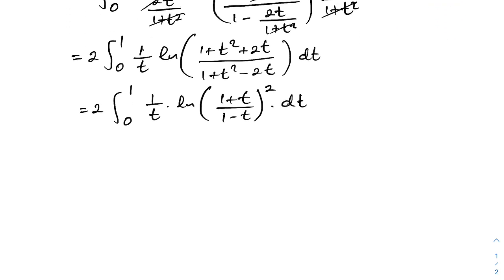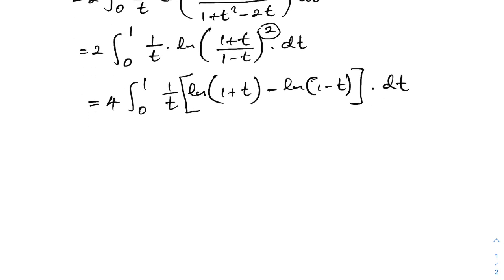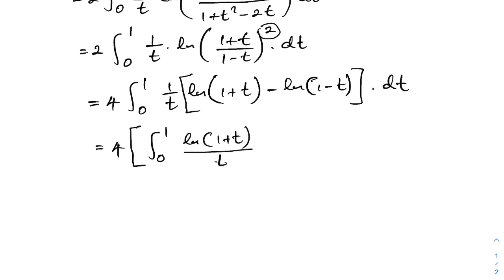According to the properties of natural log, the power of 2 can be taken outside the integral sign. So we have 4 times the integral from 0 to 1 of natural log(1 plus t) over t dt minus 4 times the integral from 0 to 1 of natural log(1 minus t) over t dt.